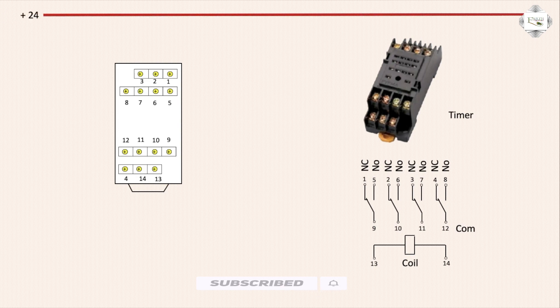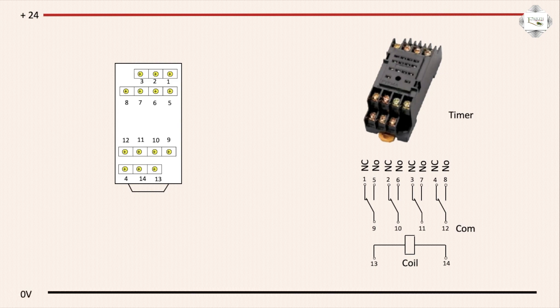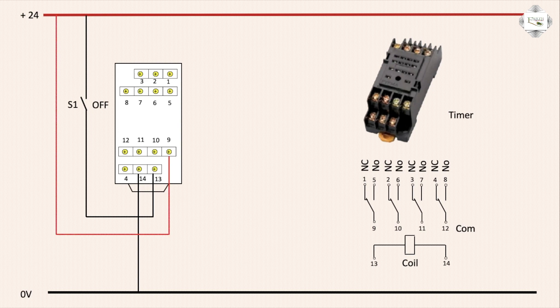First connection: 24V DC positive and negative connection. Positive goes through switch to terminal 30 connection, and neutral is terminal 14 connection. Coil connection is complete. Terminal 14 connects to terminal 9, which is the common terminal connection.